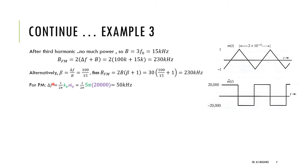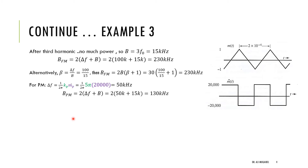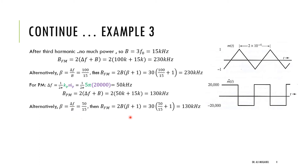For PM, delta_F = K_p × M_p_dot / 2π, where M_p_dot is the peak of the derivative. With K_p given and M_p_dot = 20,000, we get delta_F = 50 kHz. Applying Carson's rule with delta_F = 50 kHz and bandwidth = 15 kHz gives a PM bandwidth of 130 kHz. Note: we cannot conclude PM uses less bandwidth than FM, since K_f and K_p are different constants.